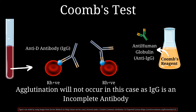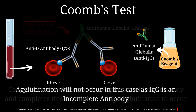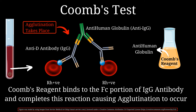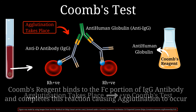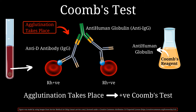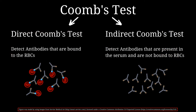To address this, we add to the blood sample a solution called Coombs reagent, which is an anti-human globulin — an antibody against IgG. This anti-human globulin binds to the Fc portion of the IgG antibody and completes the reaction, causing agglutination to occur that can be visualized in the test tube. If agglutination takes place, it is known as a Coombs positive test.